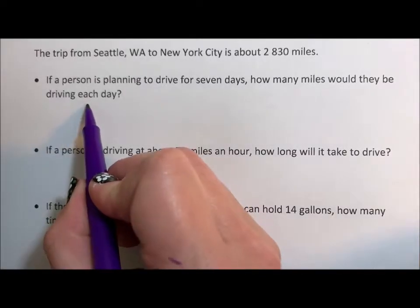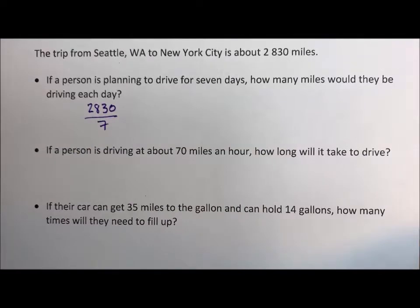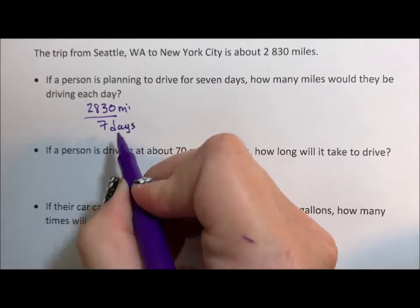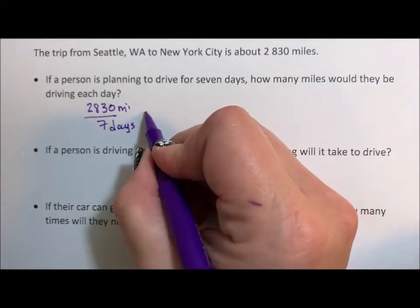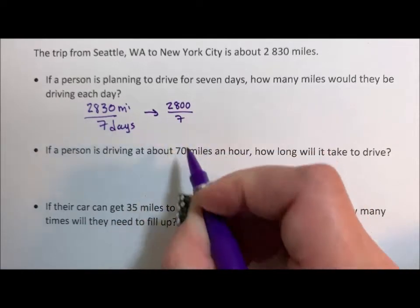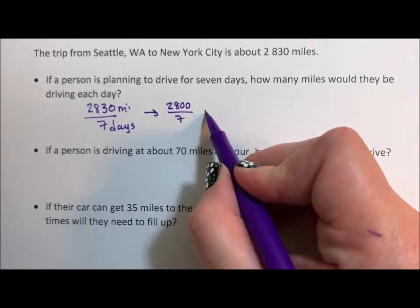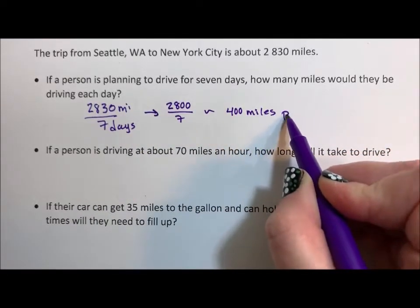Well, if I'm going to take 2,830 divided by seven — estimation is about kind of dirty numbers. So what I'm going to do is turn this into 2,800 divided by seven, because seven goes into 2,800. And I'm going to say it's about 400 miles per day.